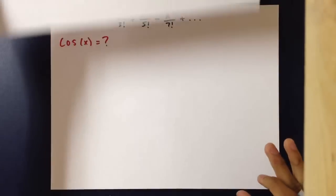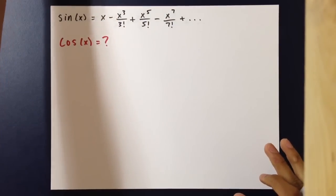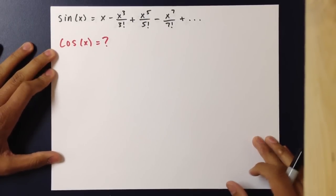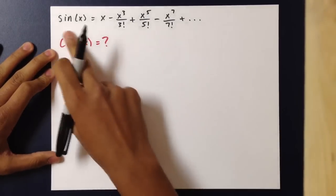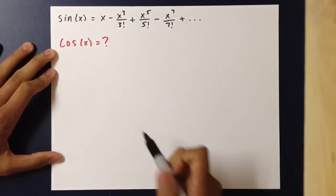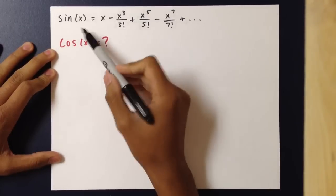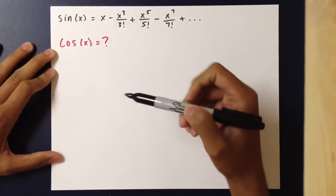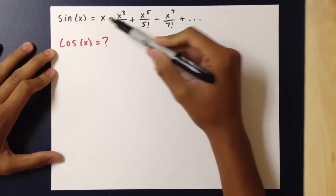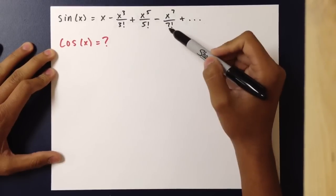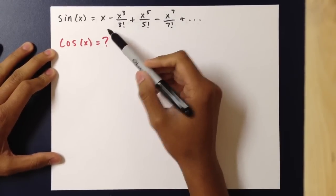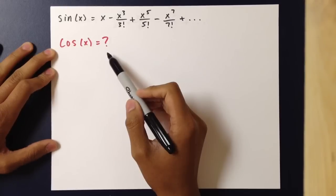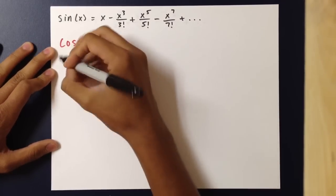Let's say they ask you to find the Taylor polynomial of cosine of x, and all you know is sine of x. Knowing that the derivative of sine of x is cosine of x, we could take the derivative of every single term in the Taylor polynomial of sine of x to find the Taylor polynomial of cosine of x. Let's try doing that now.